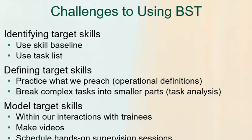When you're defining your target skills, we need to practice what we preach — writing operational definitions for what a skill looks like and what we're expecting. Then breaking those complex tasks into smaller parts, giving our trainees a task analysis of how to run a token system, for example, so that we can clearly define these target skills.